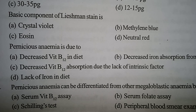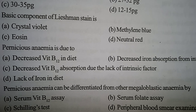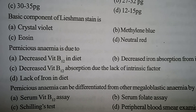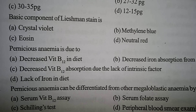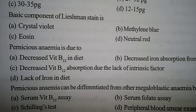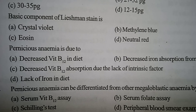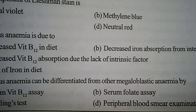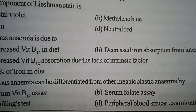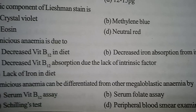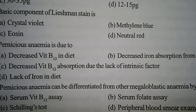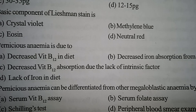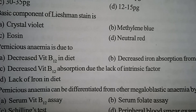Next one: pernicious anemia can be differentiated from other megaloblastic anemias by — Option A: serum vitamin B12 assay. Option B: serum folate assay. Option C: Schilling's test. Option D: peripheral blood smear examination. Correct answer: Option C, Schilling's test.